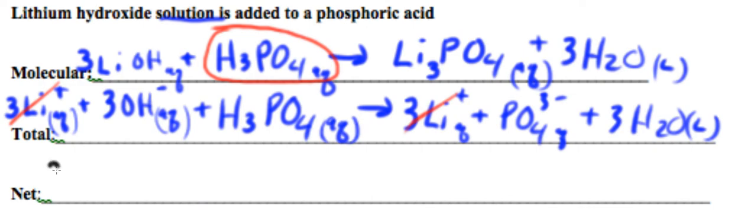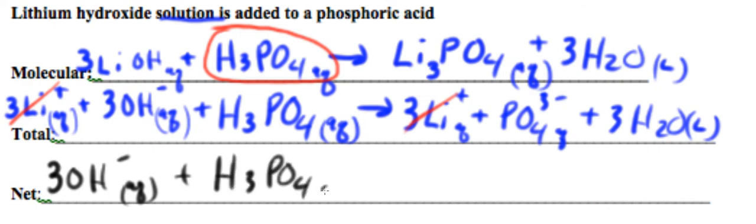So we're going to have three hydroxides plus the phosphoric acid. Again, it's a weak acid so it's written as molecules.